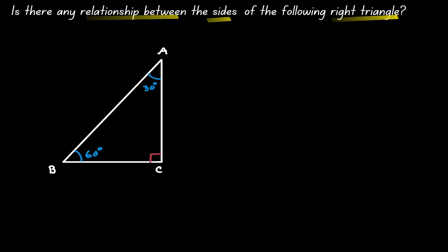Notice the values of the interior angles. There will be 30 degrees, there will be 90 degrees, and there will be 60 degrees. The shorter side in this triangle will be opposite of the angle with the least value, which is 30 degrees. Let's call the shorter side x.